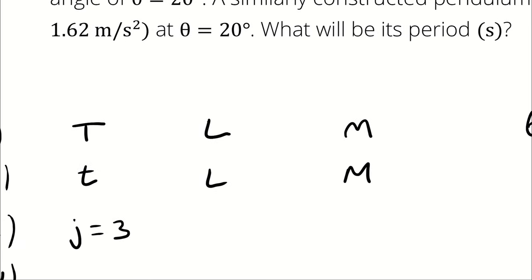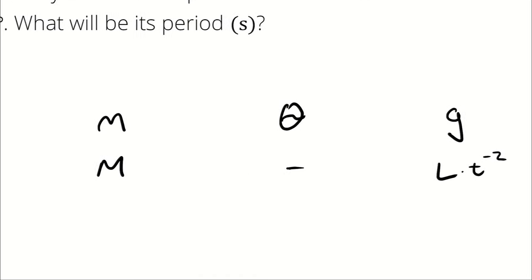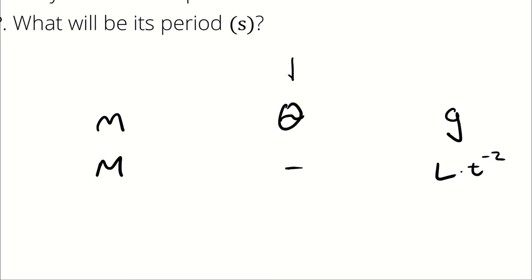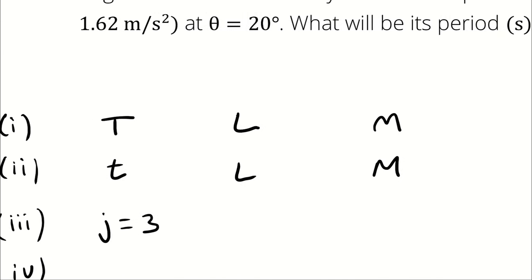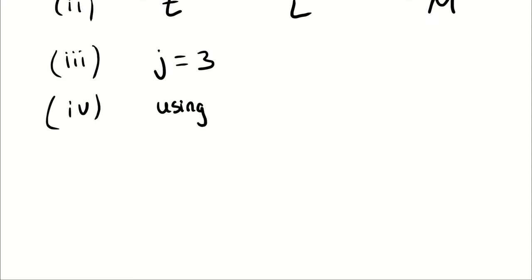Our repeating variables are selected from the five. I typically avoid parameters with no units, so I leave out theta. I also semi-arbitrarily exclude the period of oscillation since that is our dependent variable. Therefore, the repeating parameters will be length, mass, and gravity.